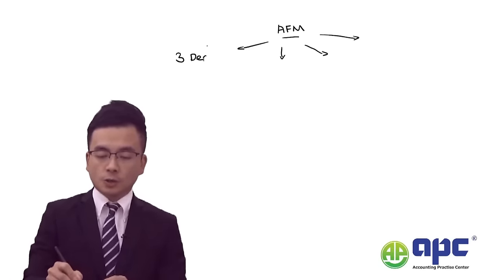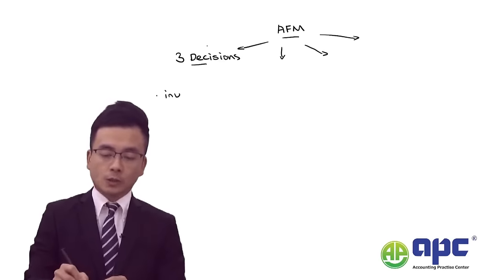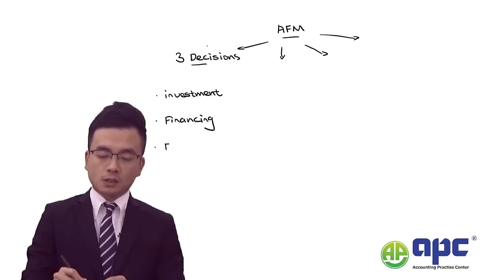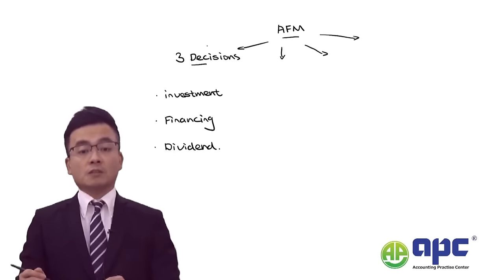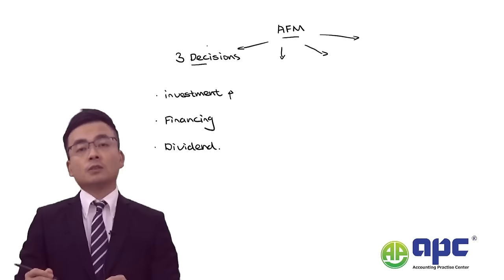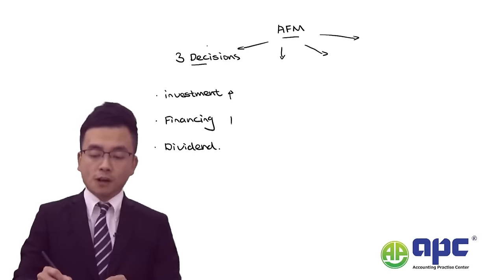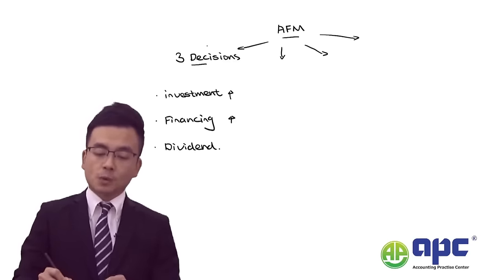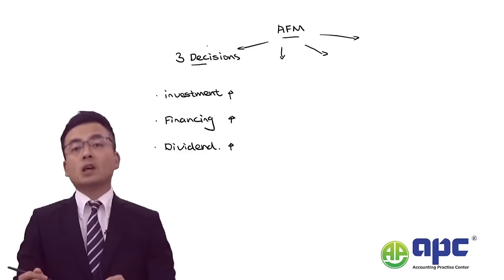There are three decisions we need to make in financial management: the investment decision, which means spending money out in buying assets; the financing decision, which means where the money comes from and the cost of finance; and the dividend policy decision, which means how we're going to be distributing profit back to investors.